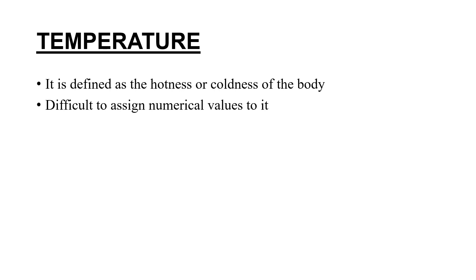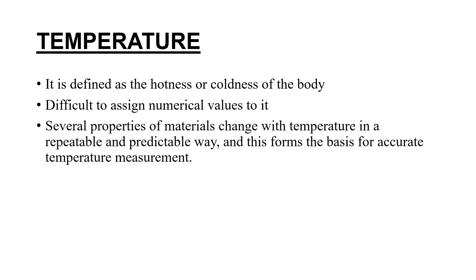We can assign numerical values to temperature, for example using a centigrade thermometer. To measure temperature, we use many types of devices that make use of properties of materials that change with respect to temperature in a repeatable and predictable way. For example, we have thermometers that use the thermal expansion of mercury with respect to temperature.